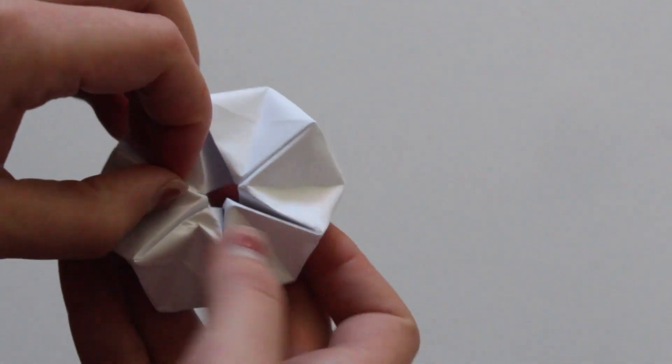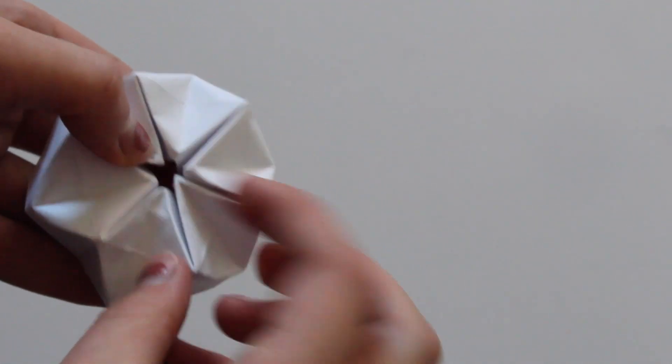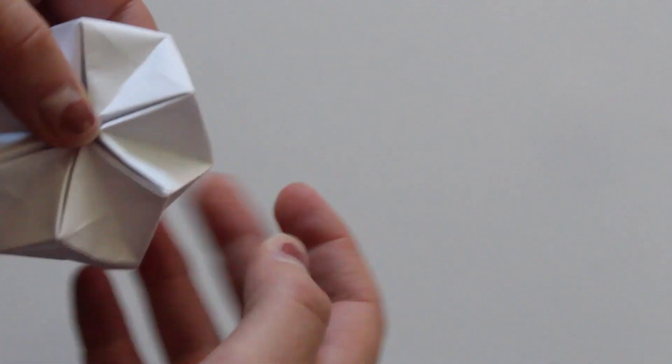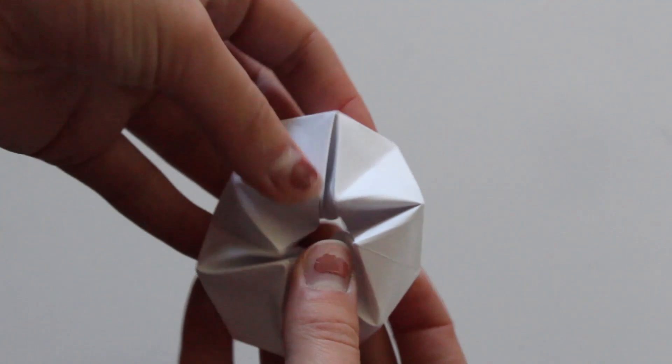And once you have all those creases pushed in, you can push in the center of the hexahydroflex and bring the outer corners to the middle, and this should turn the shape over.